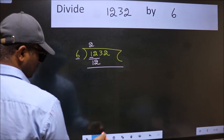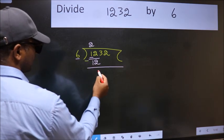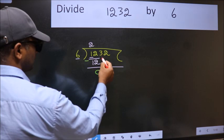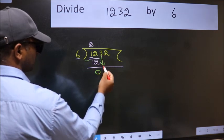Now we should subtract. We get 0. After this, bring down the beside number. So, 3 down.